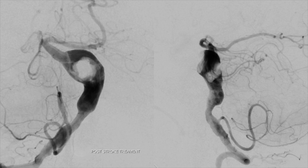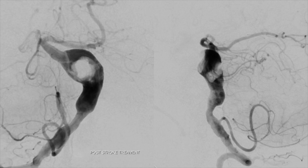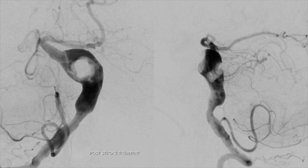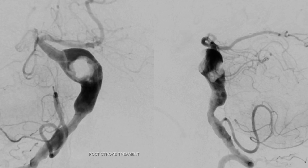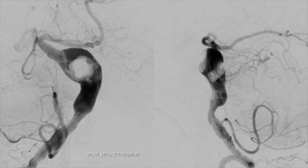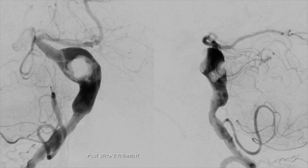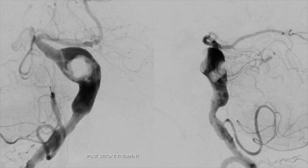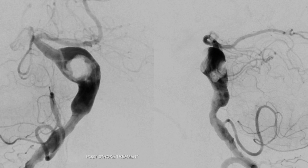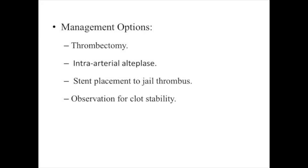At this point, it became clear that additional attempts at thrombectomy, either using a stent retriever or aspiration, would not be as effective given the large diameter of the fusiform segment. We also considered administering intra-arterial alteplase, which did not yield much benefit. There were also considerations of placing a stent acutely to jail that thrombus and to prevent it from potentially migrating more distally.